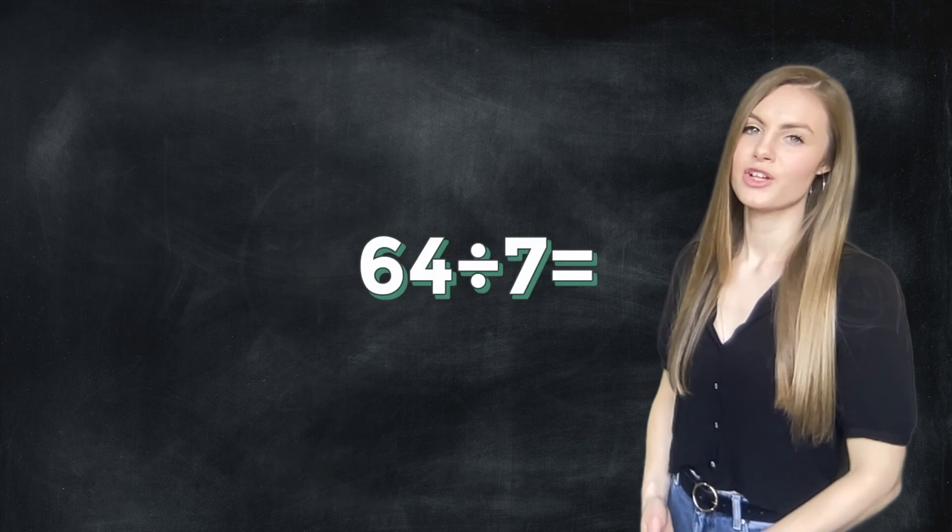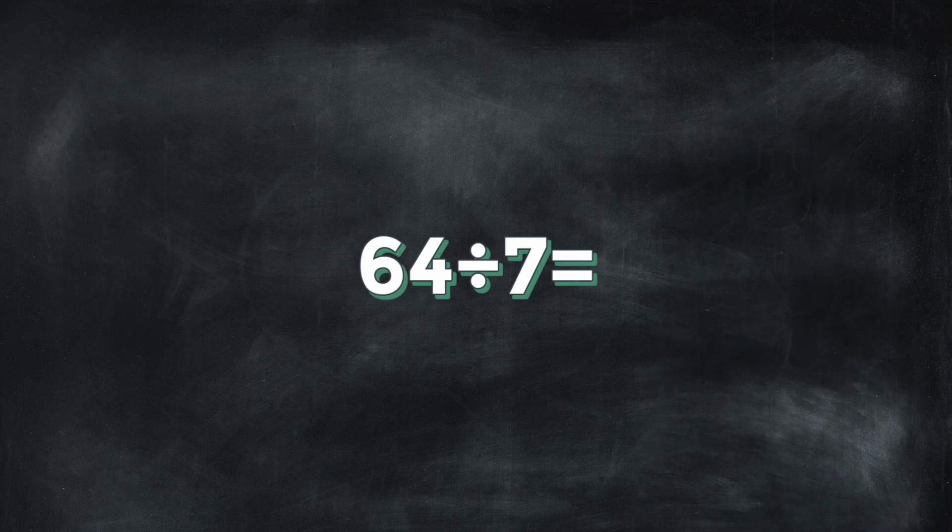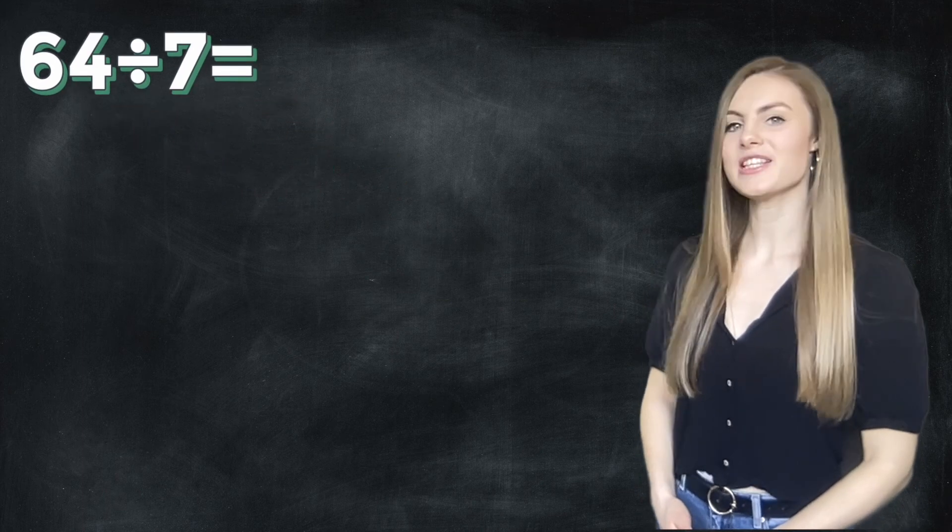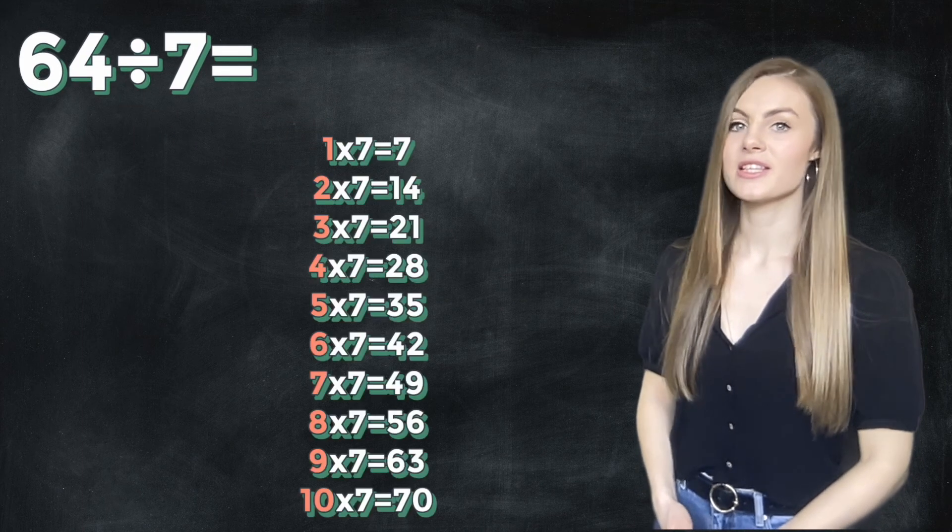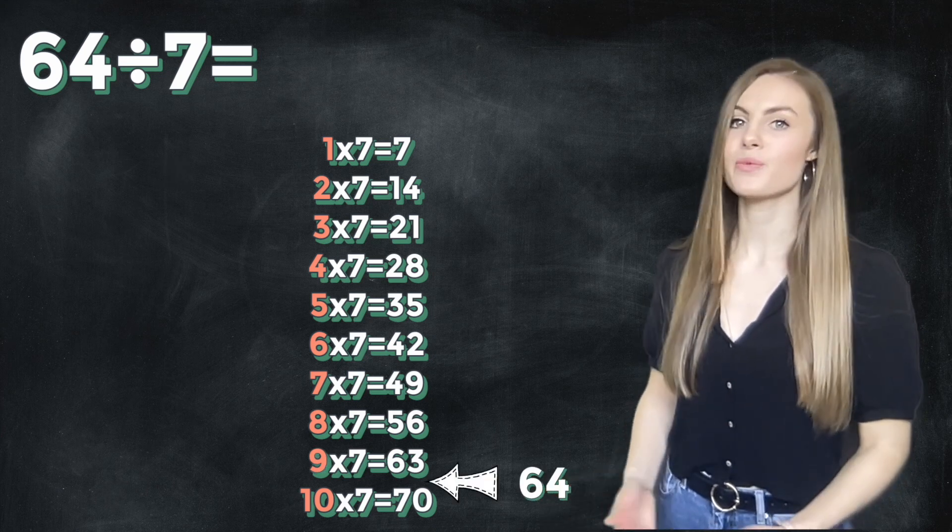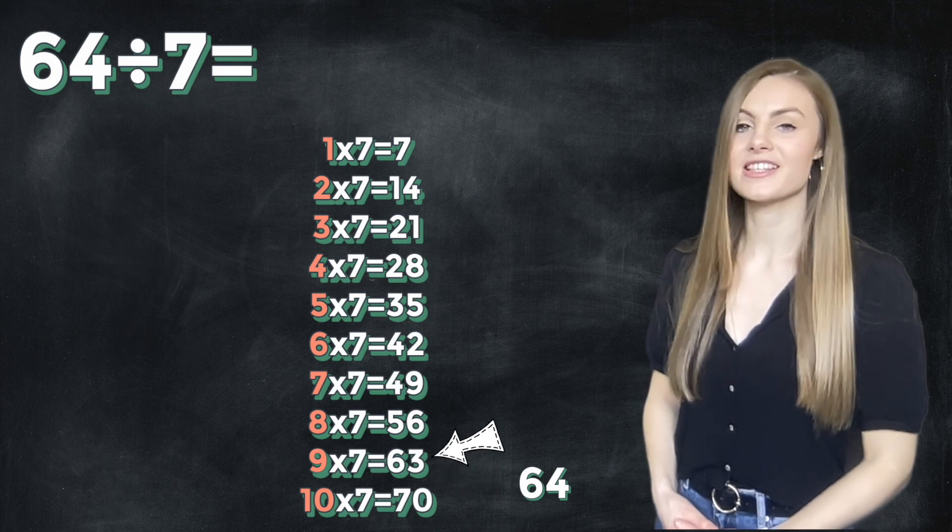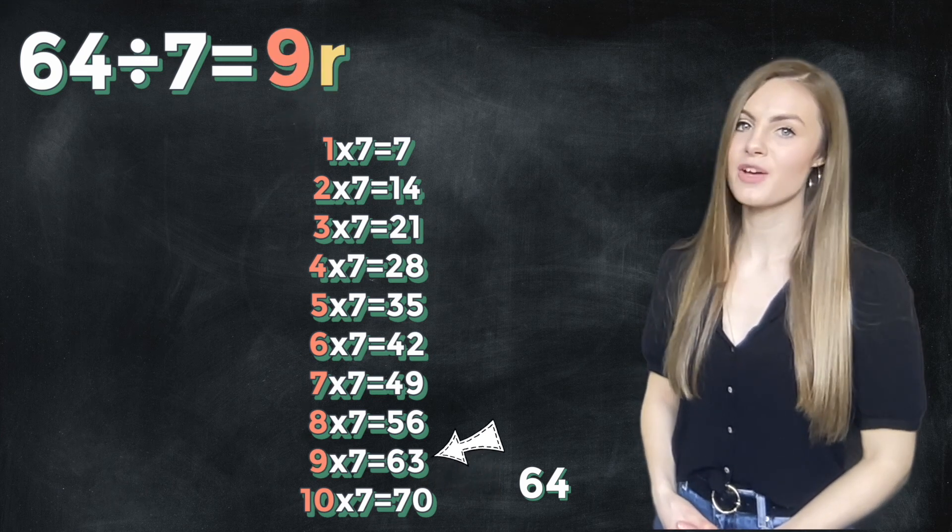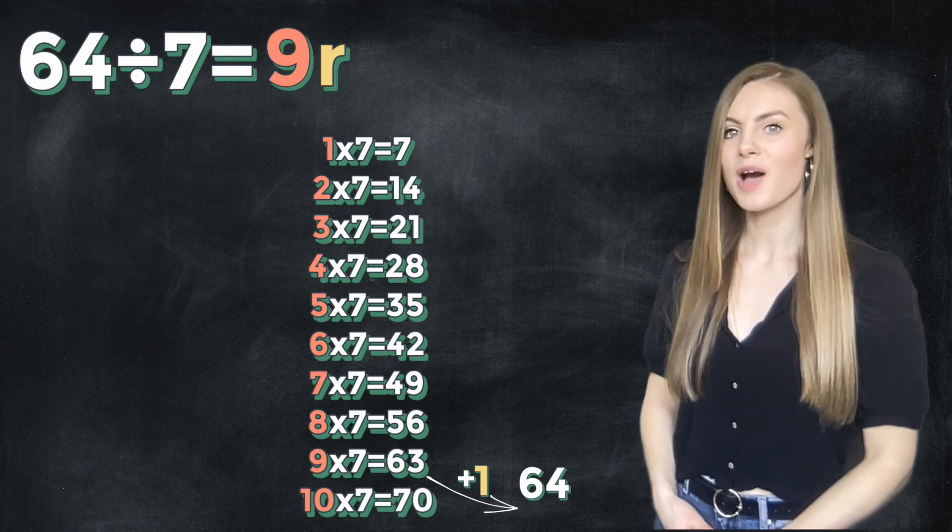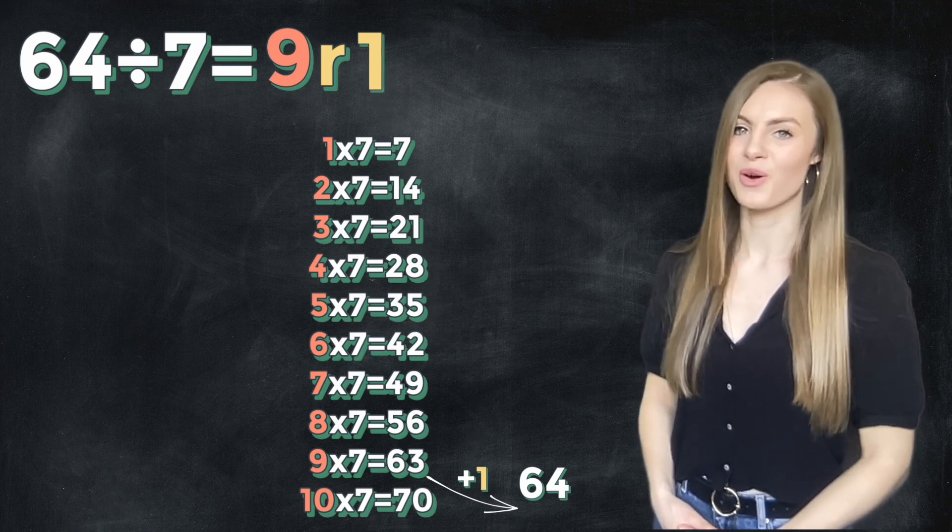Your turn to have a practice now. Try 64 divided by 7. Pause the video. Welcome back. As we can see on our 7 times table, 64 fits between 63 and 70, but we don't have 70 items so we're going to share out 63. 63 divided by 7 is 9. To work out our remainder we count on from 63 to our original number which is 64 and we get the difference of 1. So our answer is 9 remainder 1.